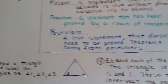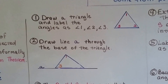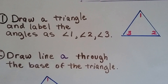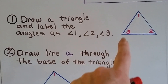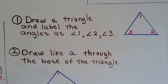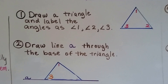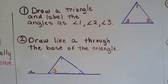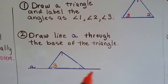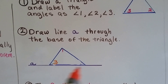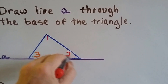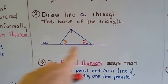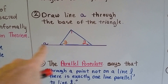The first thing we're going to do to justify this triangle sum theorem is draw a triangle and label the angles as 1, 2, and 3. You can put the 2 or 3 on either side — it doesn't matter, as long as you follow what you're doing with the corresponding angle. The next thing we're going to do is draw a line through the base of the triangle — that's line A drawn through the base. The base is the bottom.